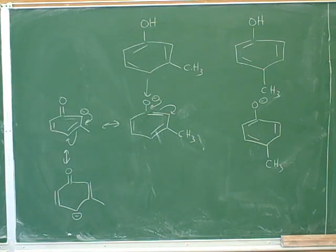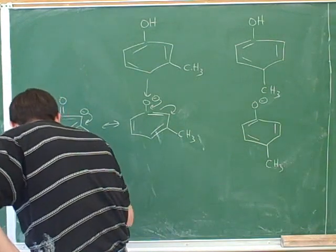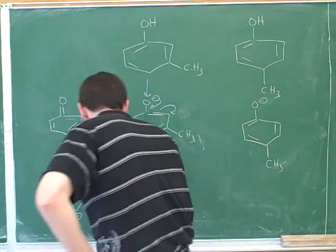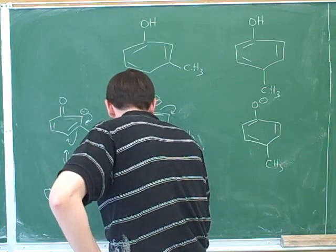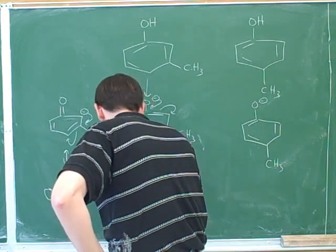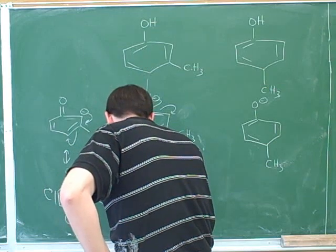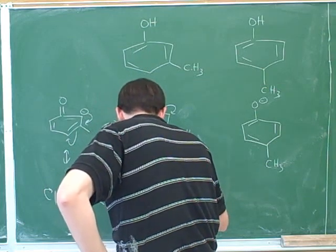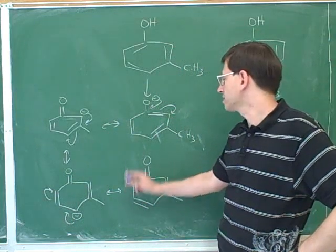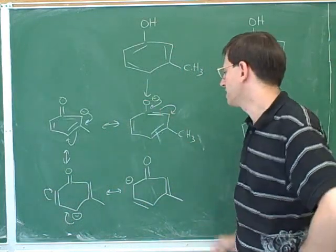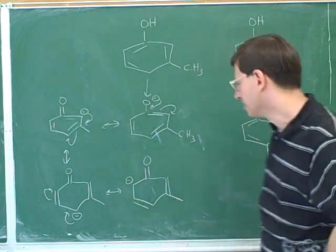That's right. So now we can move the negative charge like this. And now we're done. If we try to move the negative charge any further, it would just end up on the oxygen again, which is where we started. So we ended up with four resonant structures here again.